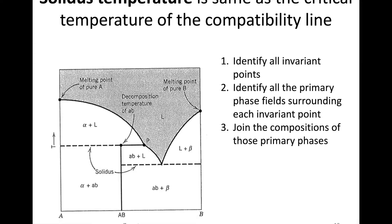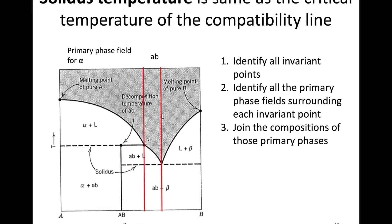One of the important things about compatibility triangles is that they tell us the solidus temperature — the critical temperature for that reaction. To illustrate, looking at the binary case, we have primary phase fields and compatibility lines, because in a binary system it's a line rather than a triangle.